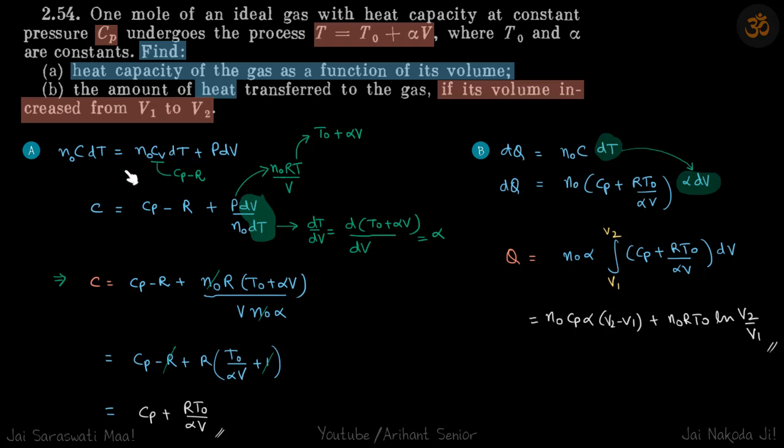From here we get C, which we need to find, is equal to this plus P dV by n0 dT. So we need a term of dV by dT. We just differentiate this and from here we get the value of dT by dV to be alpha.